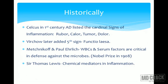The classical signs of inflammation have been described as far back as the first century. Celsus described the four cardinal signs of inflammation: Rubor, Calor, Tumor, and Dolor. The fifth sign was later added by Rudolf Virchow, whom we consider the father of modern pathology — Functio laesa, meaning loss of function. Metchnikoff and Paul Ehrlich described WBCs and serum factors critical as a defensive mechanism against microbes; Metchnikoff described phagocytosis. Sir Thomas Lewis described chemical mediators of inflammation in detail.